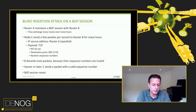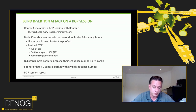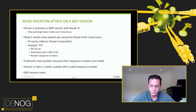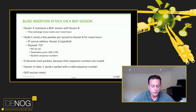As router C cannot guess the sequence number, he's just guessing it. Router B will discard most packets because the sequence number is wrong. But at one point, if he gets it right, the TCP packet is accepted. And as the reset bit was set, the TCP session or BGP session will reset. Then router C could potentially initiate a BGP session with router B and hijack it.